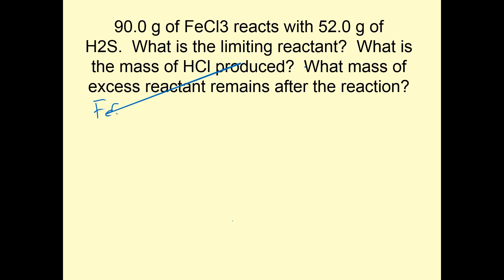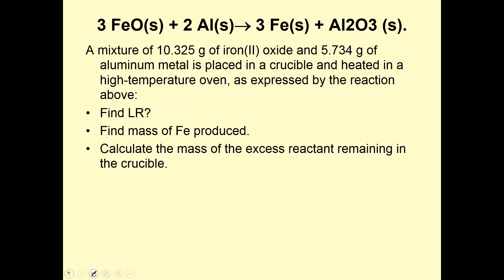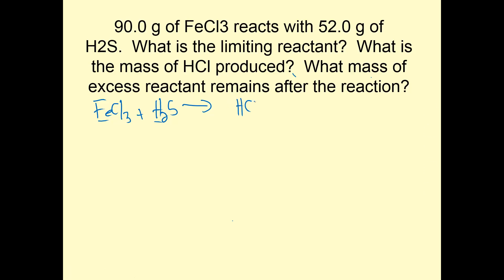I'm going to start with FeCl3 plus H2S. This is a double replacement reaction, so Fe and H2 are going to trade places, giving HCl plus FeS. Iron over here is plus 3, so I'm going to get Fe2S3. Now I need to balance it: I need 2 irons and 3 sulfurs, so I'll need 6 HCl. That will balance it. I have 90 grams of FeCl3 and 52 grams of H2S.